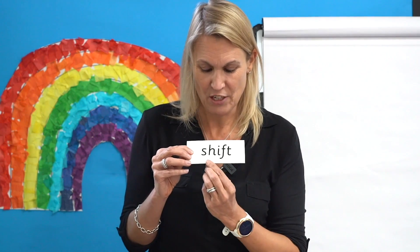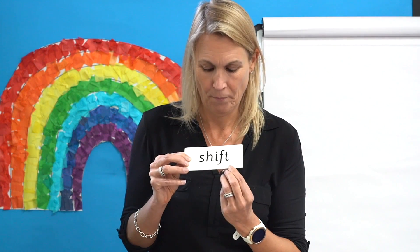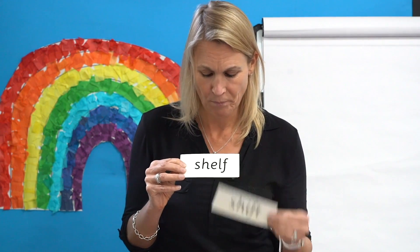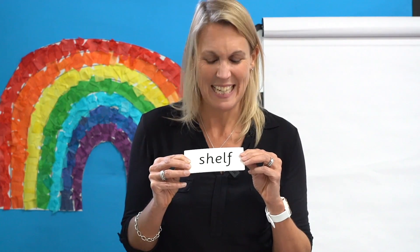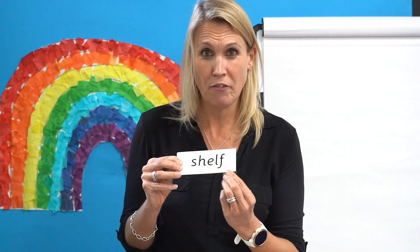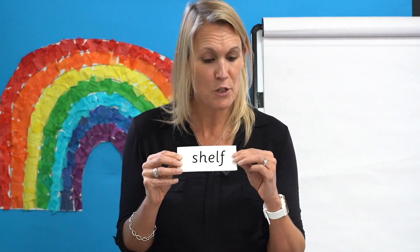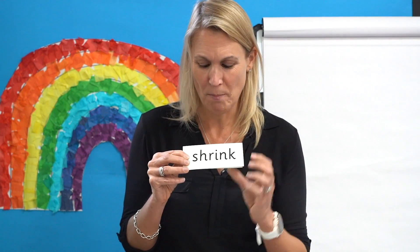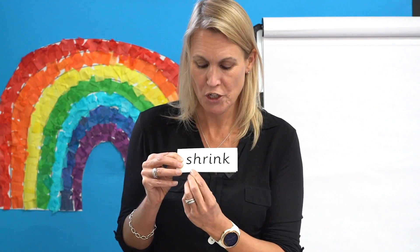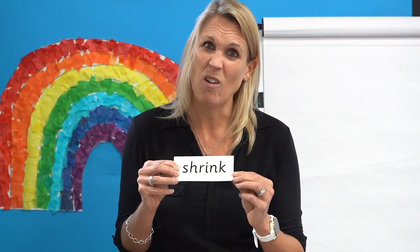Now let's read some words. Each time I want you to hunt for the digraphs and trigraphs, then say each sound and blend to say the word. Are you ready? Let's look at this one first. Can you spot the digraph? Yes, the digraph is SH. Let's hear you: SH-I-F-T. Shift! She helped me shift the boxes away from the door. Next word — the digraph is SH again. Good job. SH-E-L-F. Shelf. I put the money box on my shelf in my bedroom. SH again. Are you ready? Sh-R-I-N-K. Shrink. I often shrink my clothes in the wash.